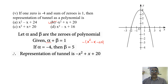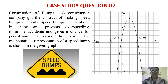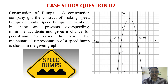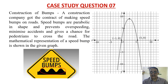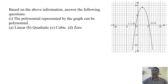Now we move to case study question seven: Construction of bumps. A construction company got the contract of making speed bumps on road. Speed bumps are parabolic in shape. They prevent over-speeding, minimize accidents, and allow pedestrians to cross the road. Based on this graph: the polynomial represented can be a quadratic polynomial.